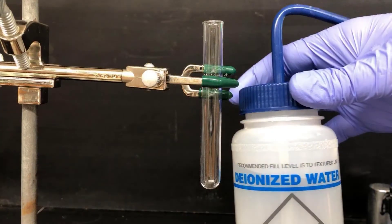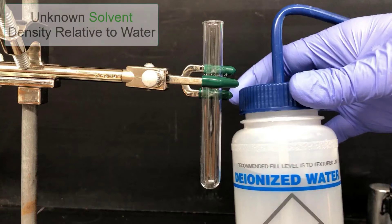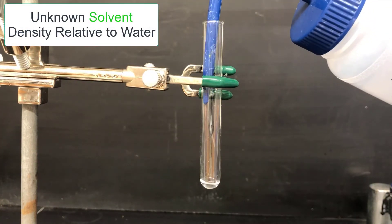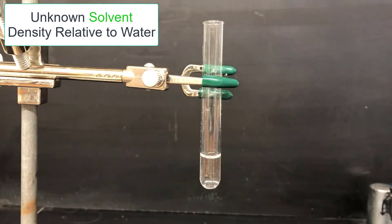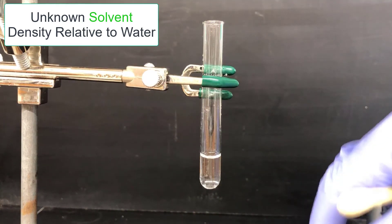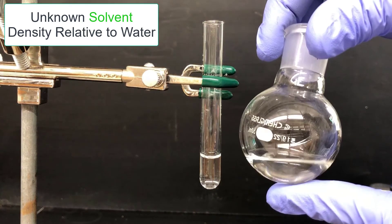Now I'm going to continue to work on identifying the solvent. I'll start by its density relative to water. Here I have some deionized water and I'm going to put that in a test tube and clamp it to a ring stand. Then I'll take a little bit of my unknown solvent and I'll add it to this test tube and see if it sinks or floats.